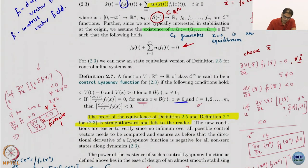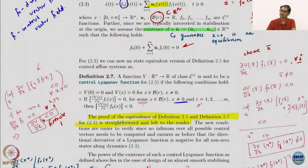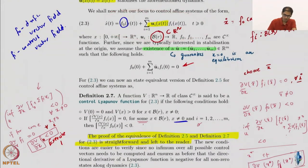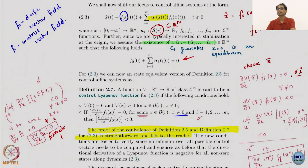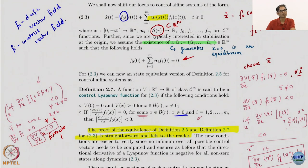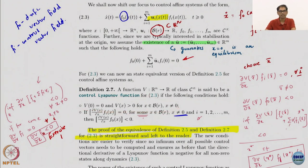We state an equivalent version of the control Lyapunov function definition for control affine systems. I say this is equivalent for this system and we will prove one half of it; the other half is an exercise. The first condition is still the same: it requires a function to be a candidate Lyapunov function. The second condition is where things change for the control affine case.